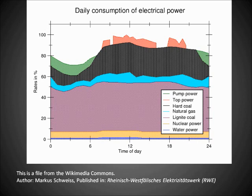A graph of power demand over the course of a day might look something like this. The y-axis indicates electric demand, and the different colors stand for different types of generators. Each different generator type emits different amounts and types of air pollutants, and so over the course of the day, the rates of air emissions change.